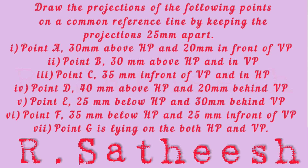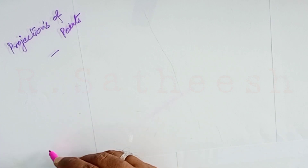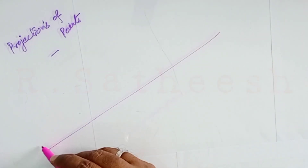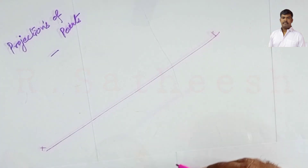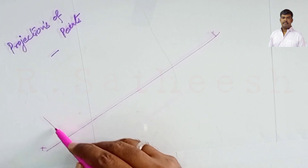Welcome students. Today we are going to discuss how to draw projections of points. The question is: draw the projection of the following points on a common reference line, keeping the projections 25 mm apart. There are seven subdivisions — points A to G. Draw one common reference line, the XY line.